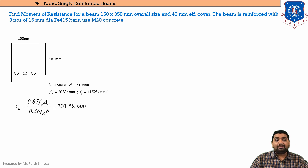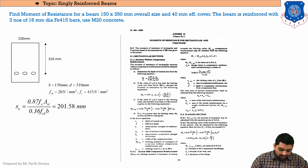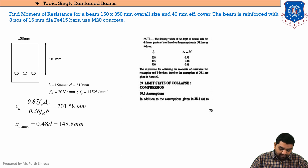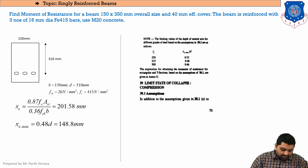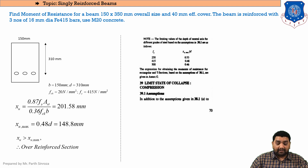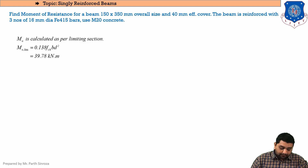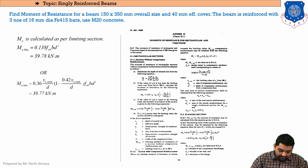The first step will always be to find the relation between XU and XU max. XU can be obtained from the equation on page 96, clause G 1.1. Solving it, we get XU = 201.58 mm. The next step is to find XU max from page 70. Fe 415 is given, so the ratio is 0.48. Solving it, XU max = 148.8 mm. In this case, XU is greater than XU max, so this is an over-reinforced section.